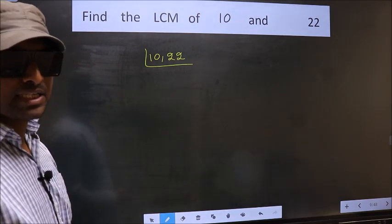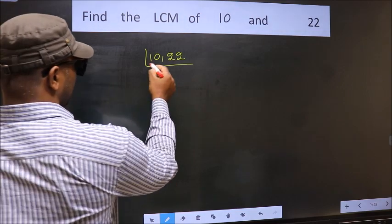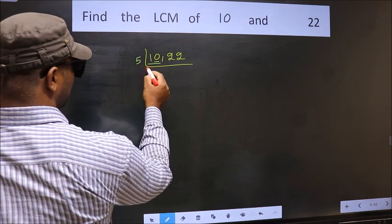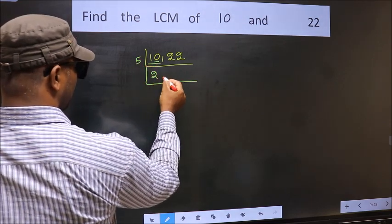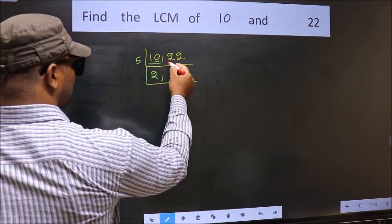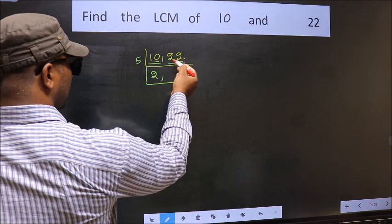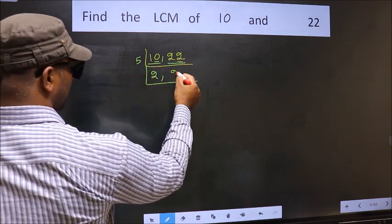Now you should focus on the first number which is 10 here. Here the last digit is 0, so take 5. When do we get 10 in the 5 table? 5 times 2 is 10. Now the other number, 22. Here the last digit is neither 0 nor 5, so this number is not divisible by 5. So you write it down as it is.